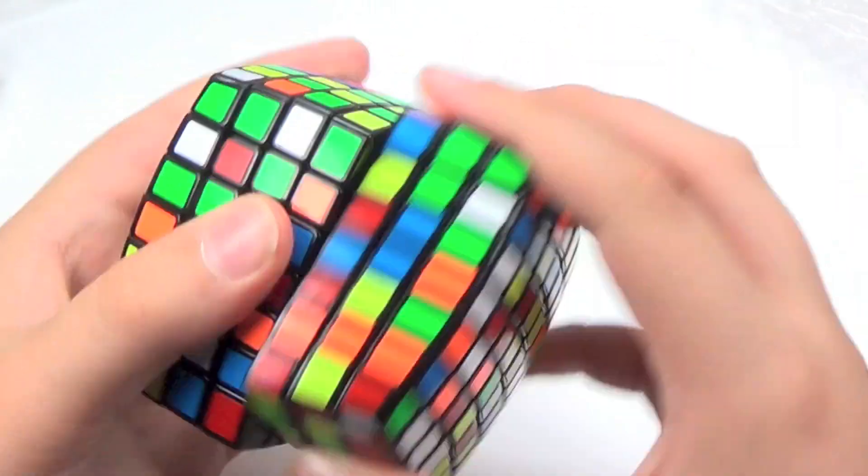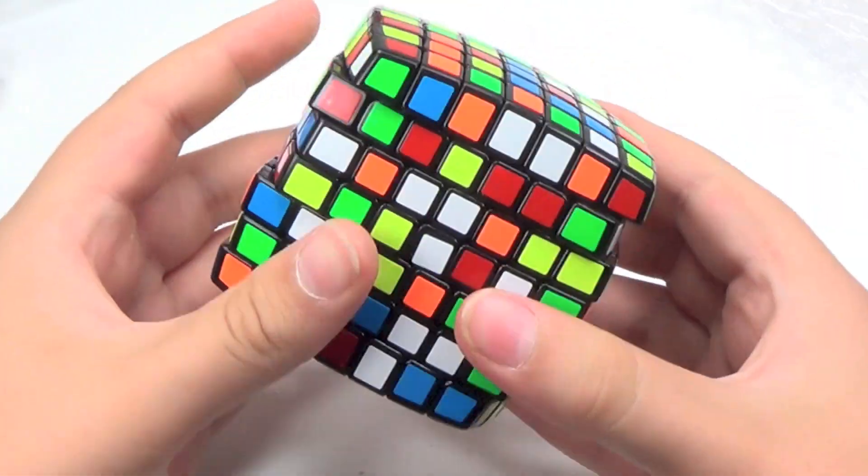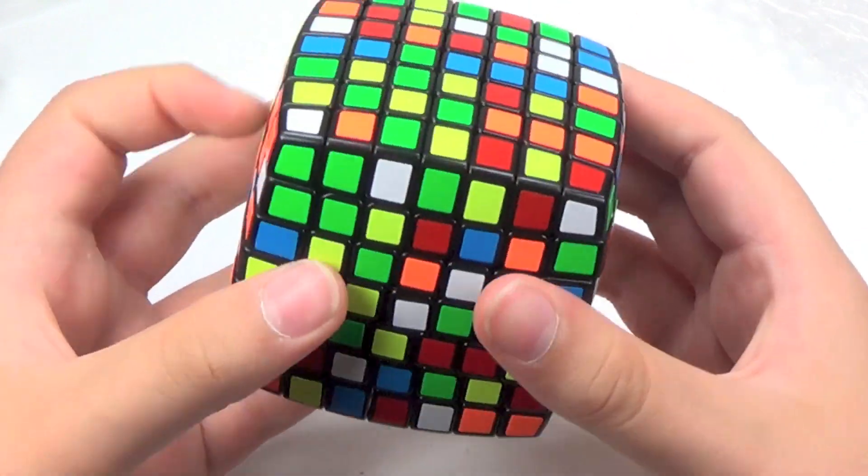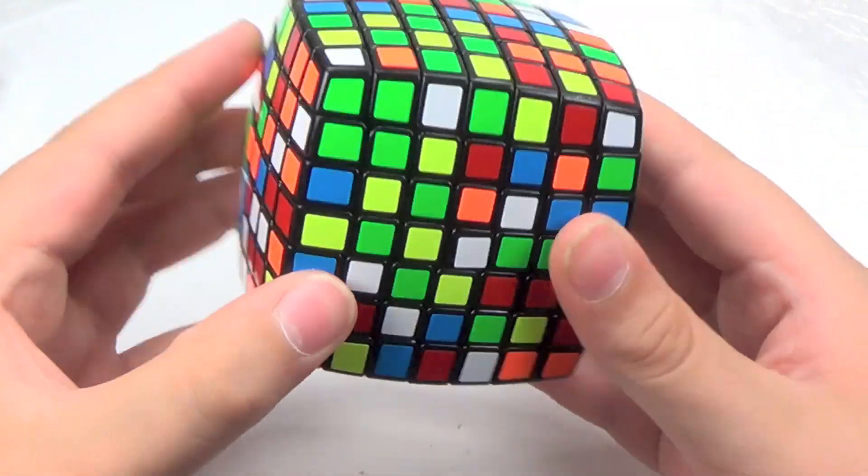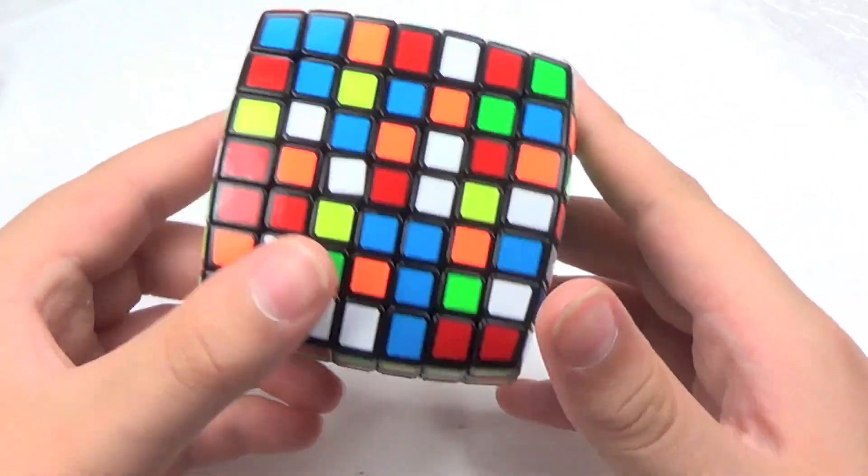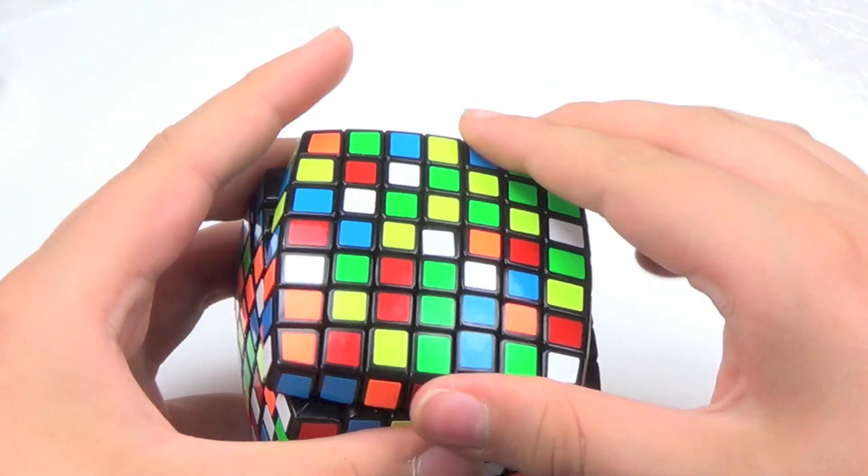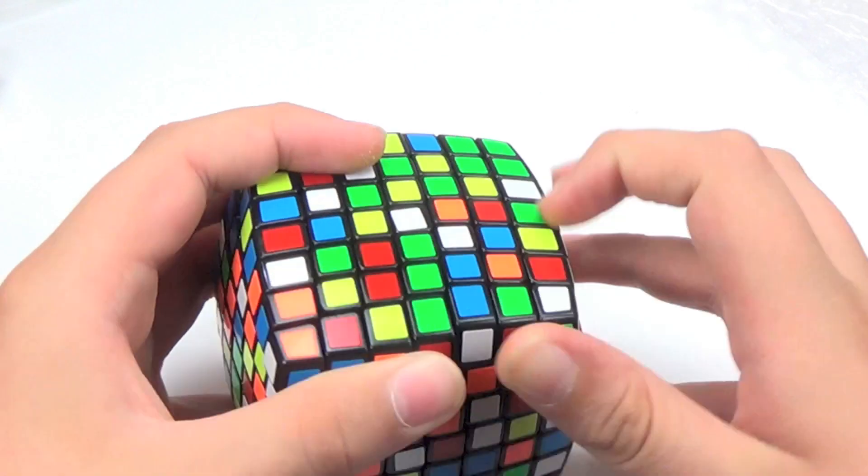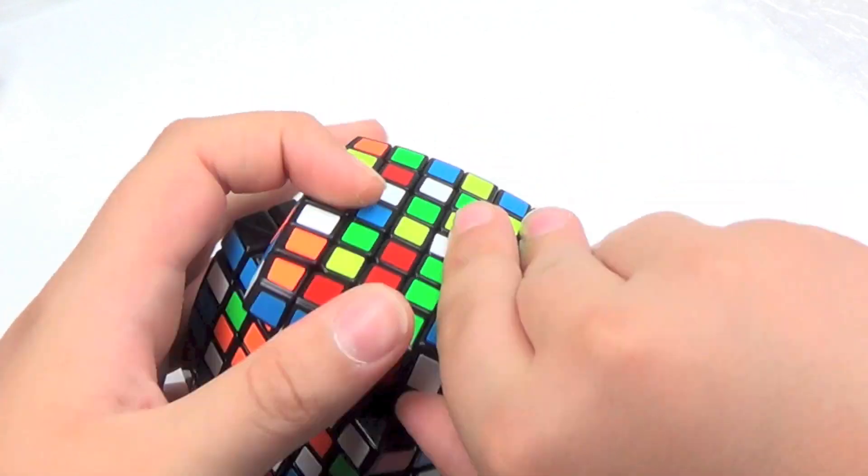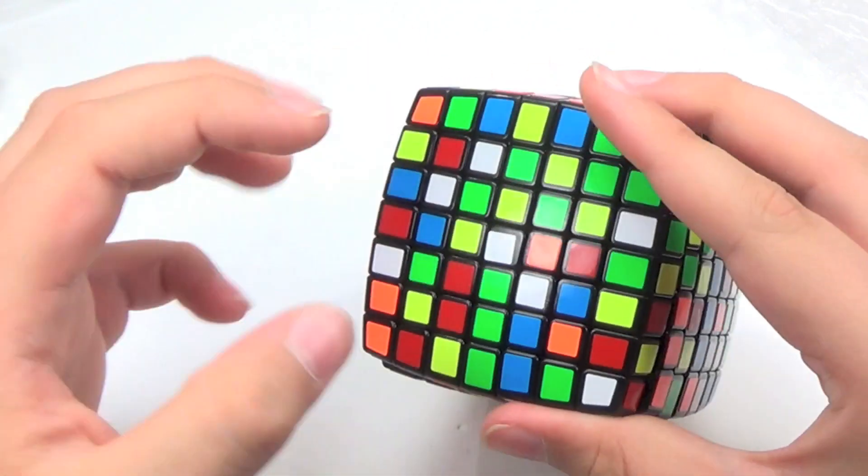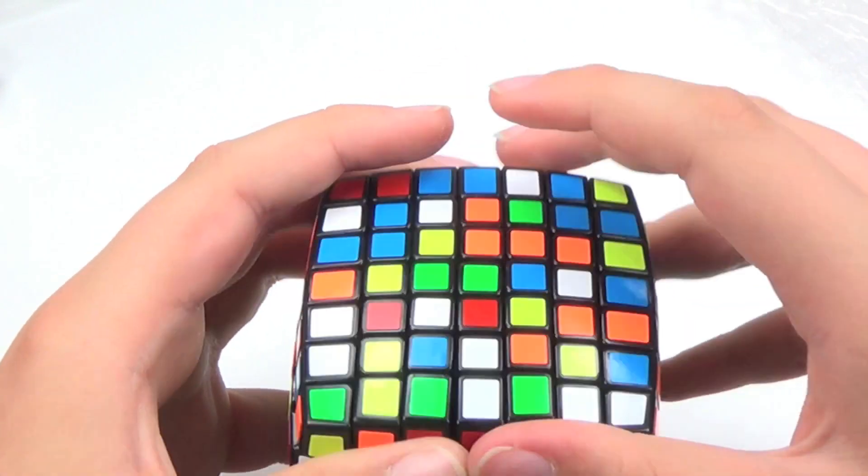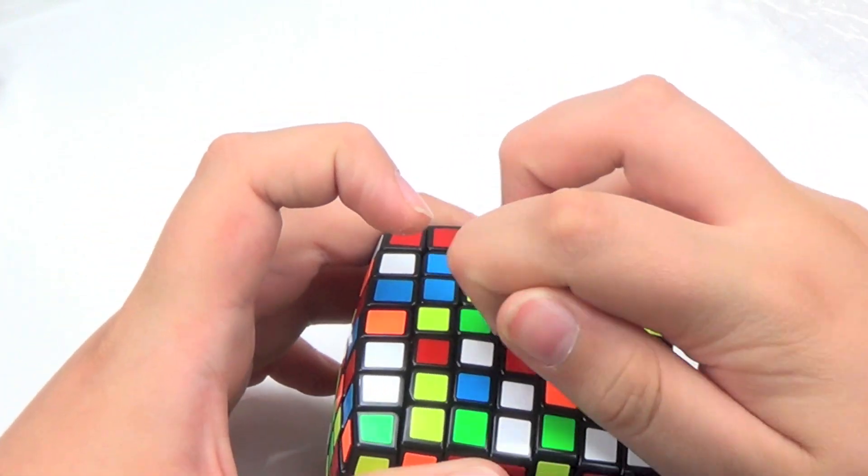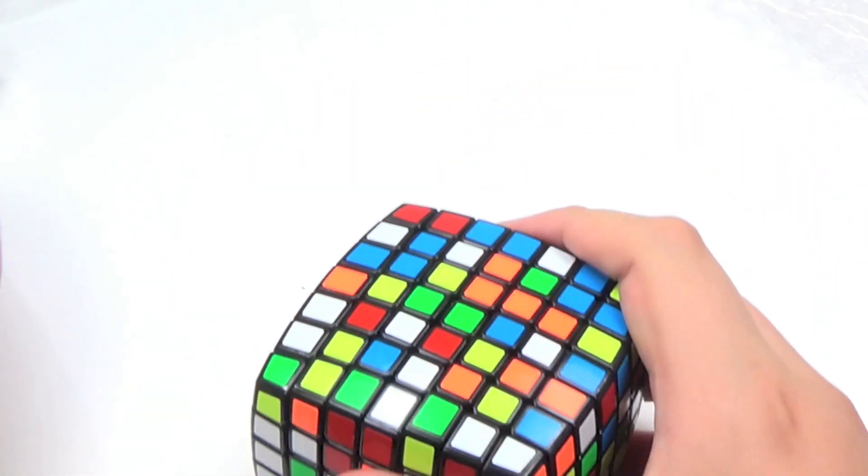So there we go. That is the Moyu Ofu 7x7. I'm wondering if they're going to make several versions of this, like they've done with their 3x3 and 4x4 and stuff. I'm not sure though. I wonder if we could pop this open any sort of way. I don't know. I get the feeling that you're going to have to take off the center cap.